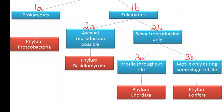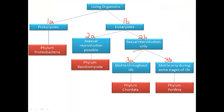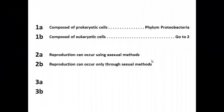I look back at my flow chart to make my connections on the dichotomous key. 2A connects directly to phylum basidiomycota, so I fill this in on statement 2A. Then I go back to the flow map. 2B connects to 3A and 3B, so I need to write, go to 3 on my dichotomous key for statement 2B.